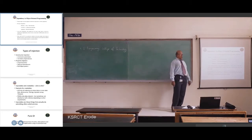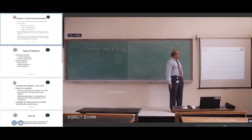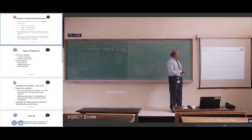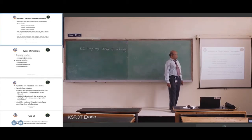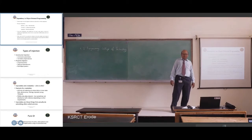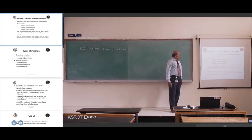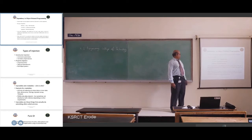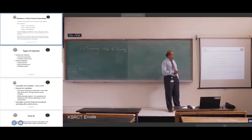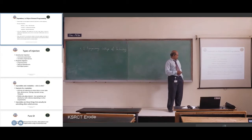The dependency is the object of a class which depends on another object. The class uses the functionality of another class. In object-oriented programming, dependency is established using inheritance, association, and aggregation. Inheritance is a parent-child relationship, association is a bi-directional relationship, and aggregation is a whole-part relationship.